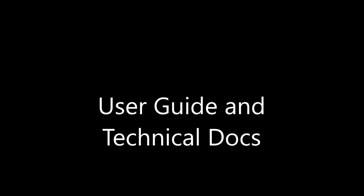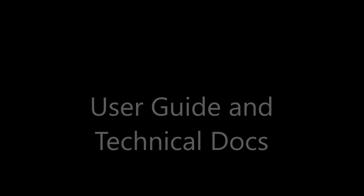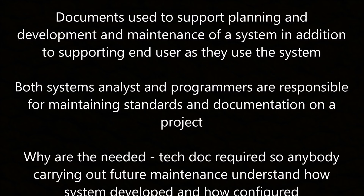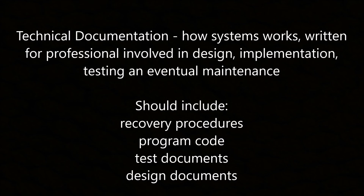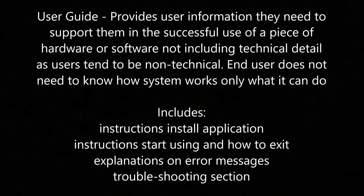User guide and technical documentation. Documents are used to support the planning, development, and maintenance of a system, as well as supporting the end user. Both systems analysts and programmers are responsible for maintaining standards and documentation on a project. The technical documentation describes how the system works; it's written for professionals and involves design, implementation, testing, and eventual maintenance. It should include recovery procedures, program code, test documents, and design documents. The user guide provides users with the information they need to support successful use of hardware or software, not including technical detail as users tend to be non-technical. The end user only needs to know what the system can do. It should include instructions to install the application, how to start using it, how to exit it, explanations of error messages, and a troubleshooting section.